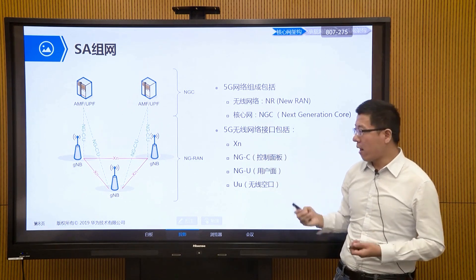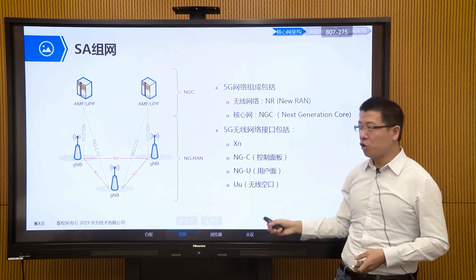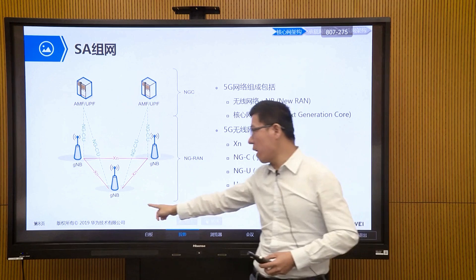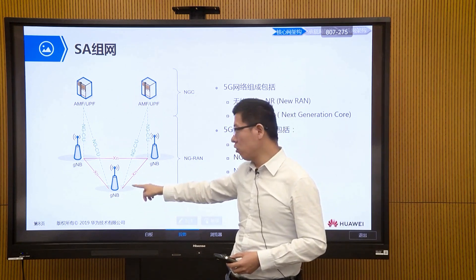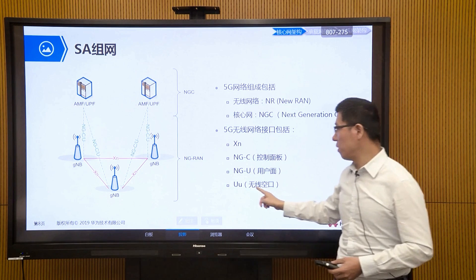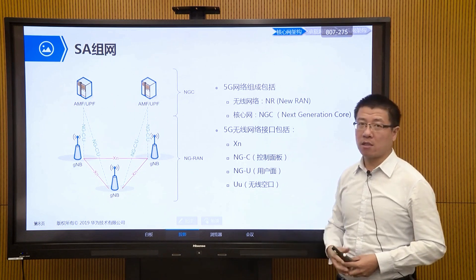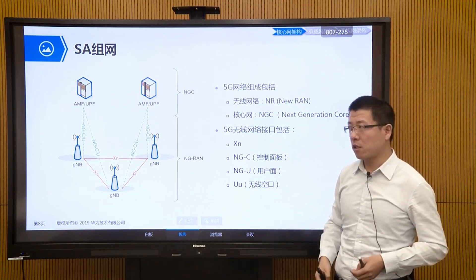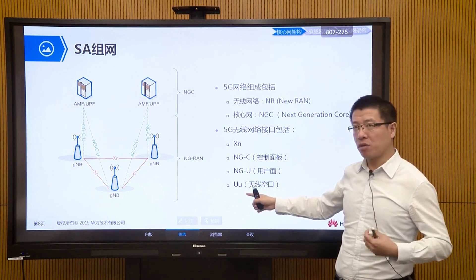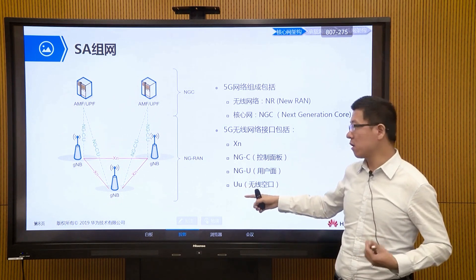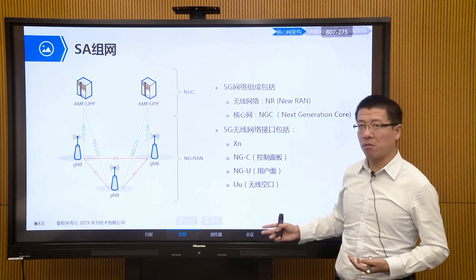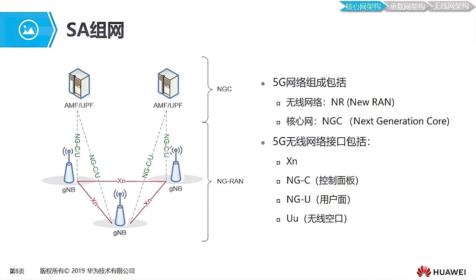There is also our air interface — the 5G terminal connects through electromagnetic waves to the 5G base station. This is our wireless air interface, called the UU interface. This interface name has been used since the 3G era and continued into 4G. In 5G, we still use this name, but the protocol details of the interface have enhancements and differences compared to the 4G era.